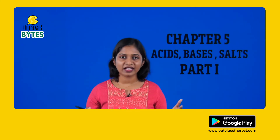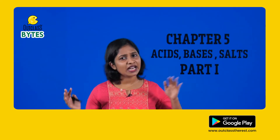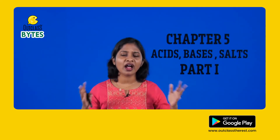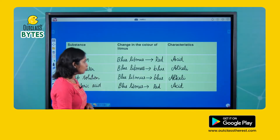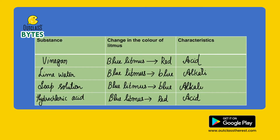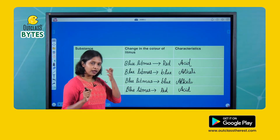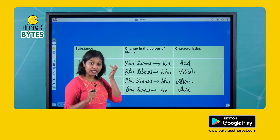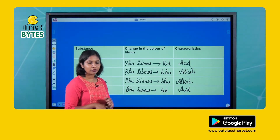We are going to study the kitchen area and food materials. We are going to study the Acid Base. There is a change in the color of litmus — that is a characteristic. There is a litmus paper that we use. We are going to study it in the lab.